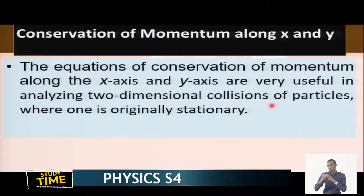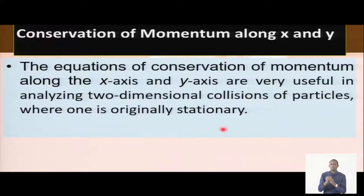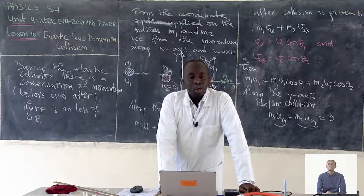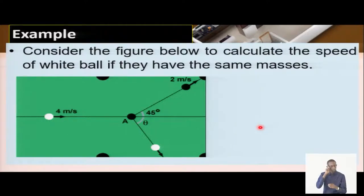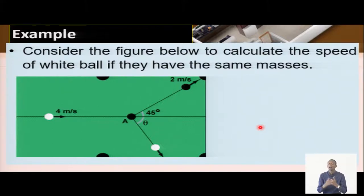These conservation of momentum equations along the x and y axes are very useful in analyzing two-dimensional collisions where one particle is originally stationary. Now let's consider an example. Consider the figure below to calculate the speed of the white ball if both balls have the same masses. Think about how this question can be solved.